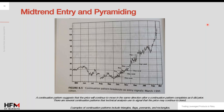The same perspective applies for a downtrend — vice versa. Continuous patterns include triangles, flags, pennants, rectangles, and so on. We had all of them in this cotton example.